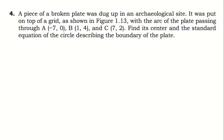I would like to discuss this problem: a piece of broken plate was dug up in an archaeological site. It was put on top of a grid, and as shown in the figure, the arc of the plate passes through the points negative seven zero, one four, and seven two. We are given three points.